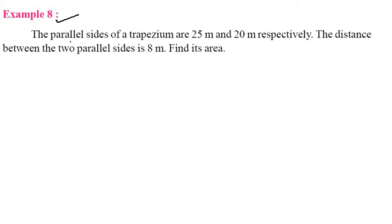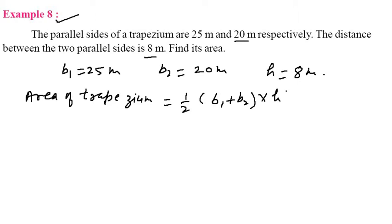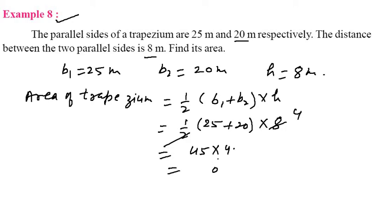Now come to Example 8. Parallel sides of a trapezium: B1 = 25 m and B2 = 20 m. The distance between the two parallel sides H = 8 m. Area of trapezium = 1/2 × (B1 + B2) × h = 1/2 × (25 + 20) × 8 = 1/2 × 45 × 8 = 180 m².